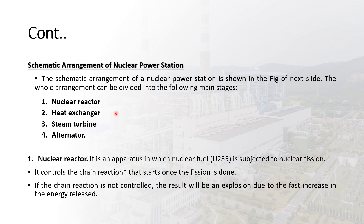The schematic arrangement of a nuclear power station consists of: nuclear reactor, heat exchanger, steam turbine, and alternator. The nuclear reactor is an apparatus in which nuclear fuel is subjected to nuclear fission; it controls the chain reaction.